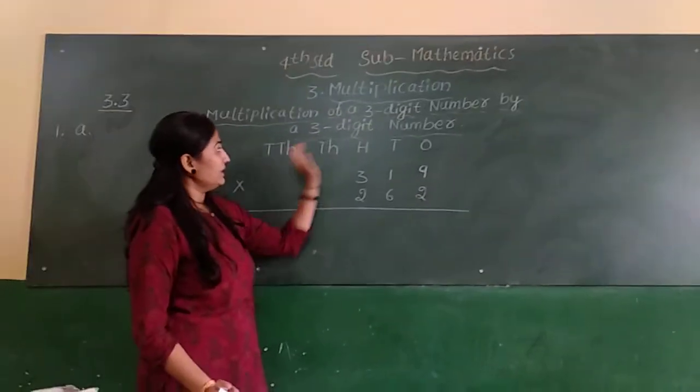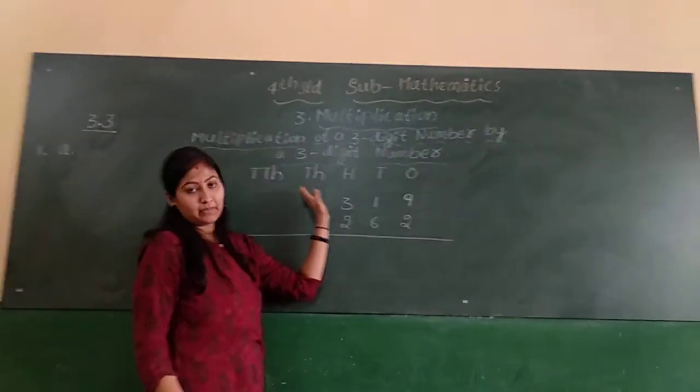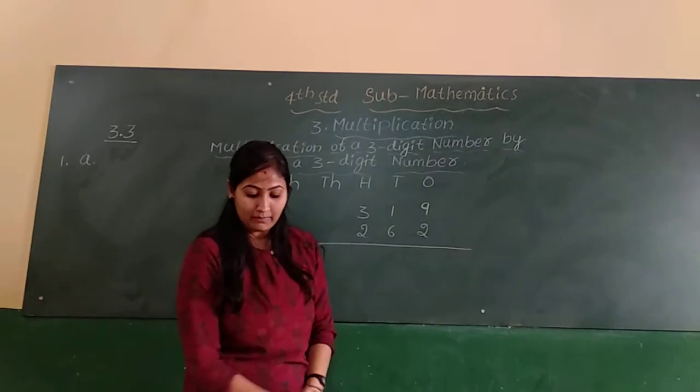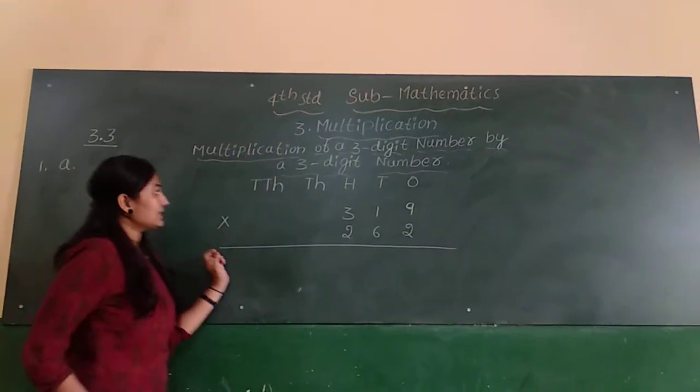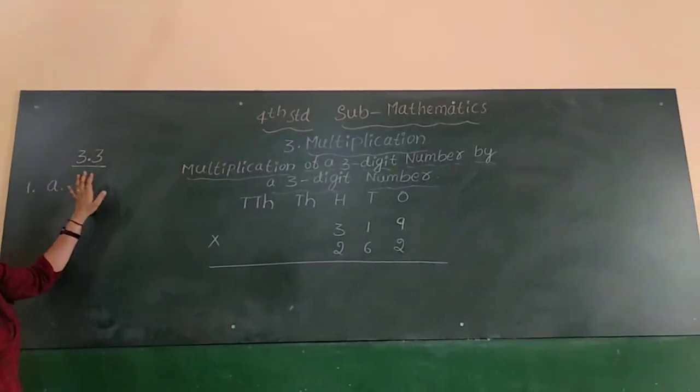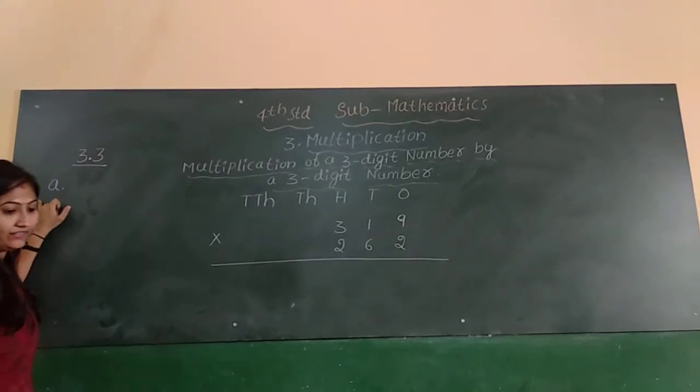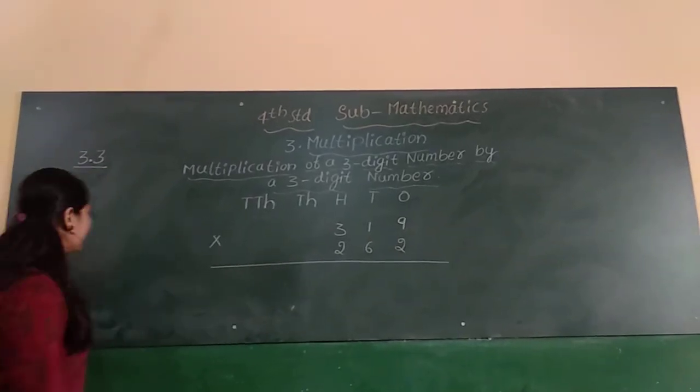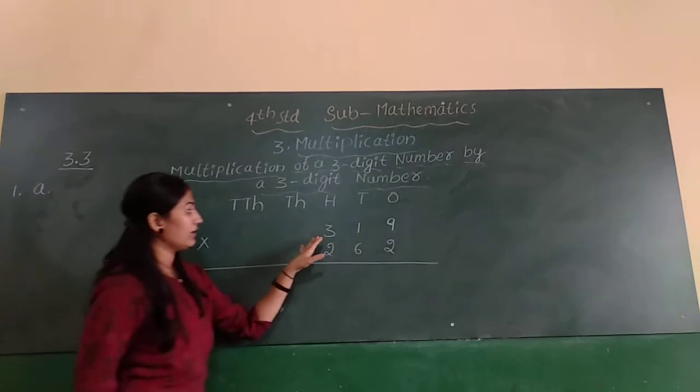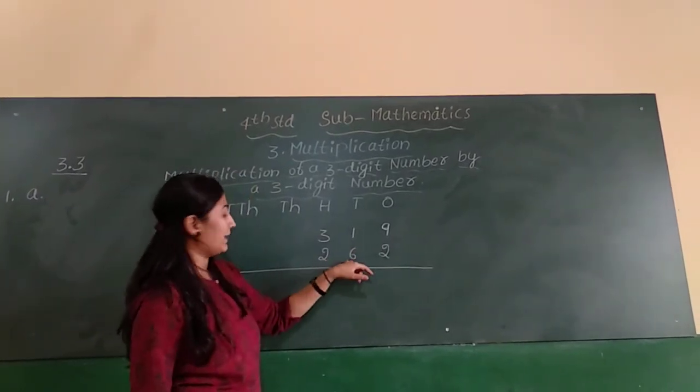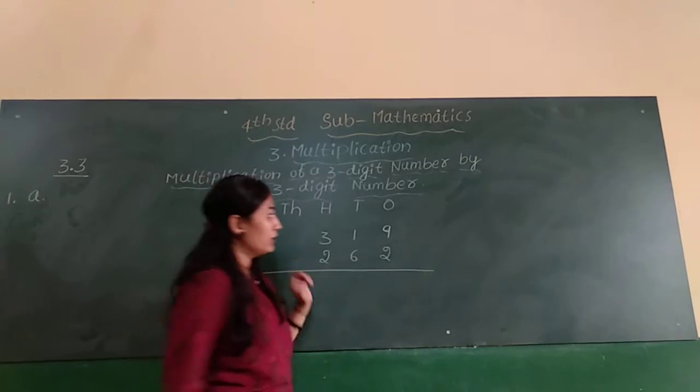Hi, today we will see the multiplication of 3-digit numbers by 3-digit numbers. For this I am taking an example from exercise 3.3. First problem: multiply 319 by 262.